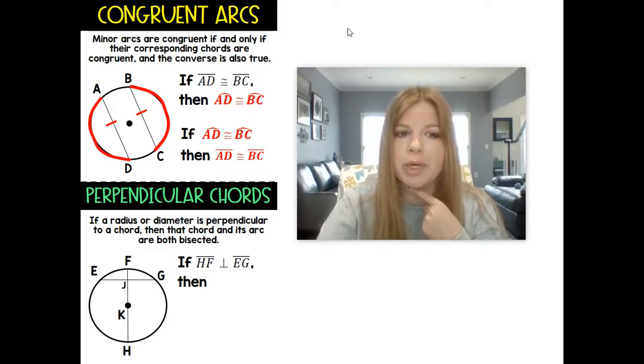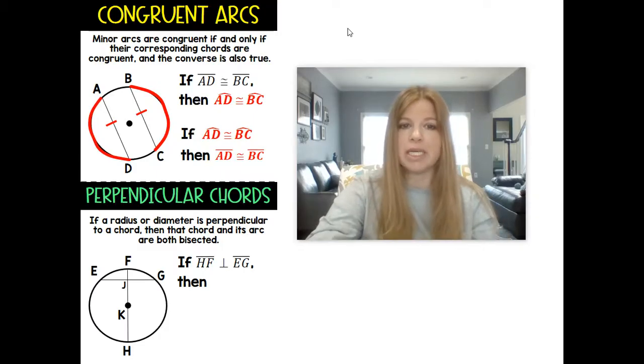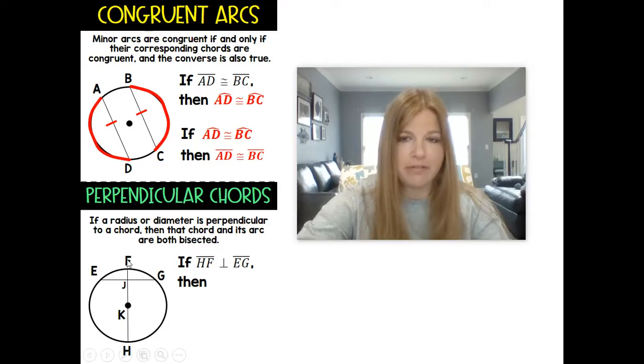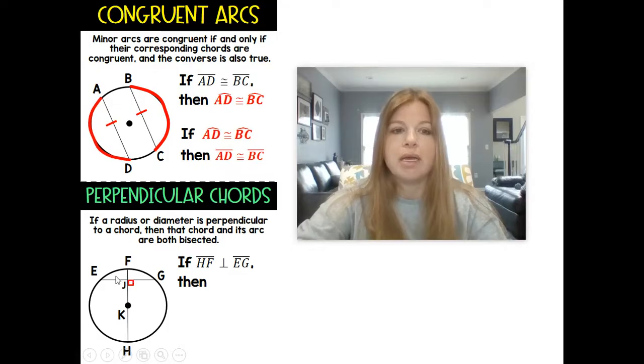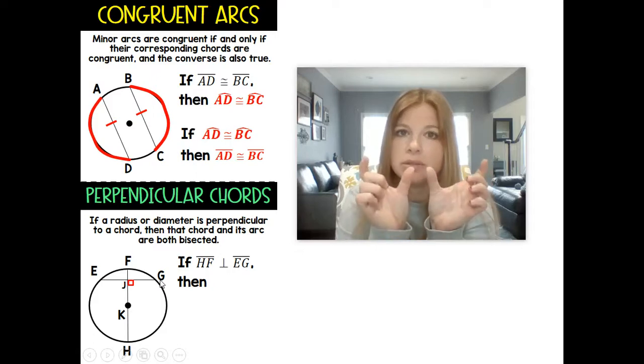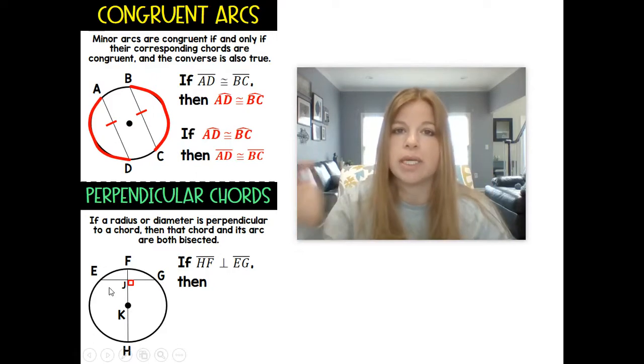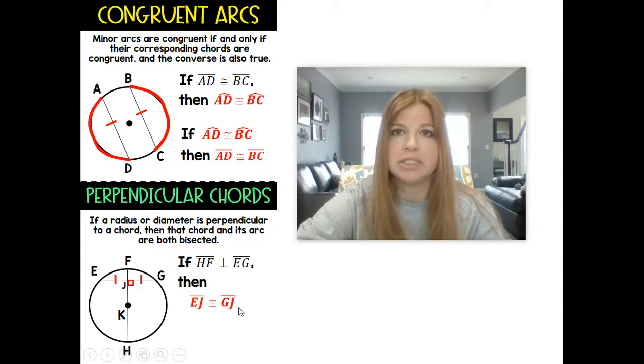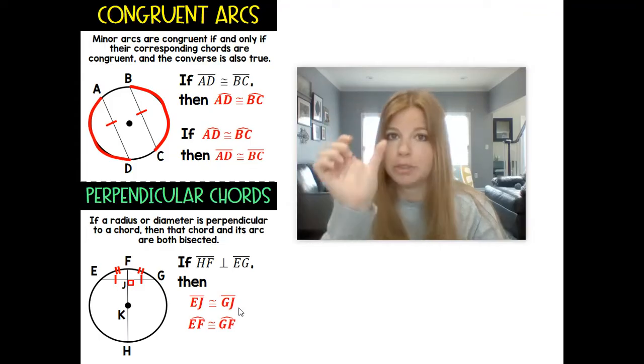Now, perpendicular chords. This is super important. It says if a radius or diameter is perpendicular to a chord, then that chord and its arc are both bisected. So if HF is congruent to EG, if those two are perpendicular to each other, then this chord EG gets bisected, it gets cut into two congruent halves. And the same thing with this arc EG, that also gets cut in half into two congruent halves. So it would mean that EJ is congruent to GJ, those segments, and then arc EF is congruent to arc GF.